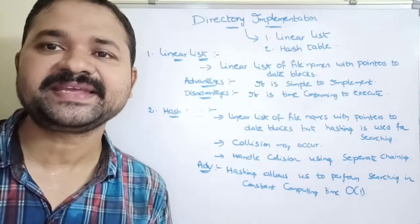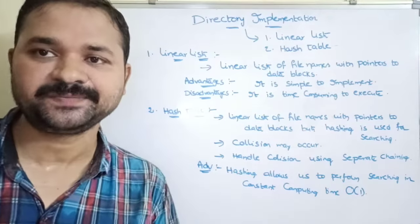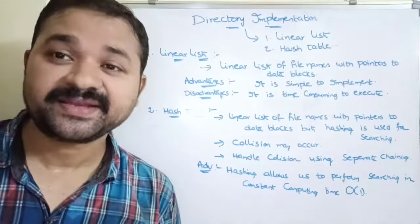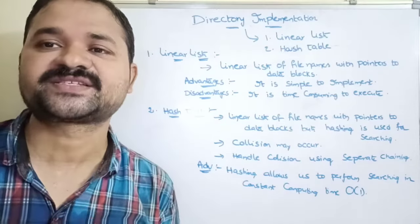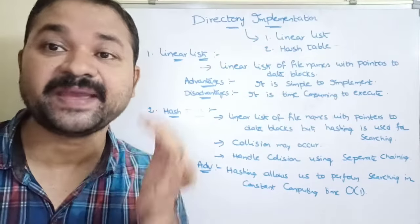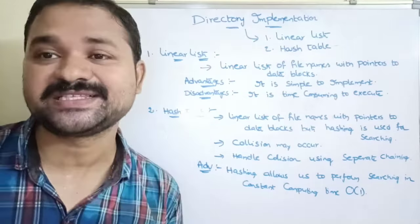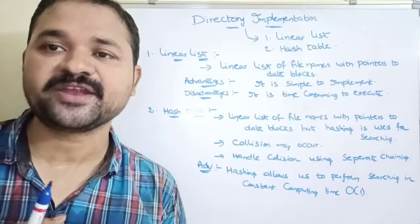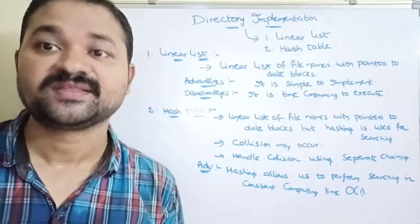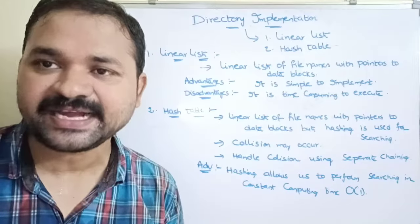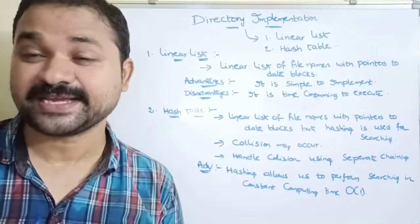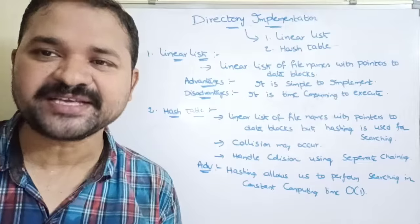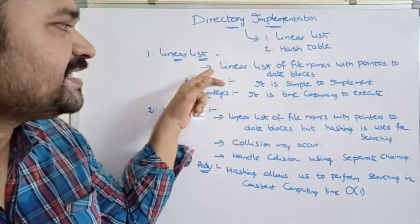Let's see about directory implementation. We know that a directory means a collection of files. We use directories mainly to organize files. There are two approaches to implement a directory: the first approach is linear list, and the second approach is hash table.